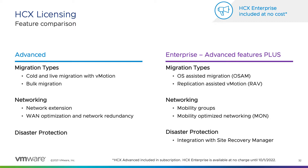The Advanced Licensing includes cold and live migrations of workloads from on-premises to AVS utilizing vMotion. These migrations run in a serial fashion, meaning one at a time. Bulk migration allows customers to migrate hundreds of VMs in parallel. This does require a reboot; however, migrations can be scheduled so that they can occur during a maintenance window.